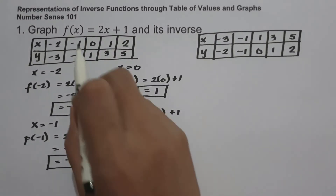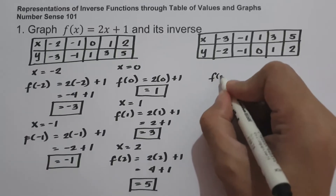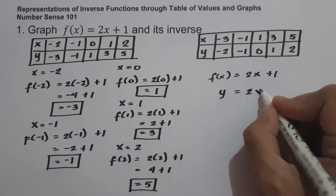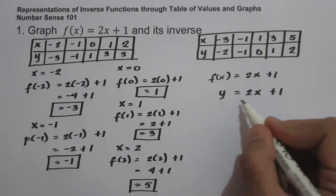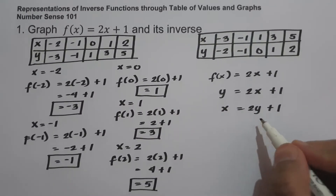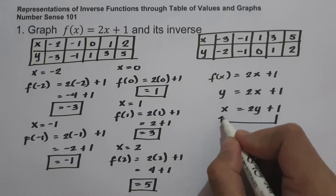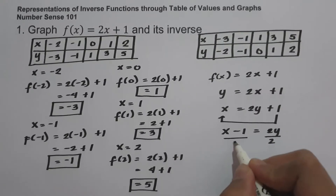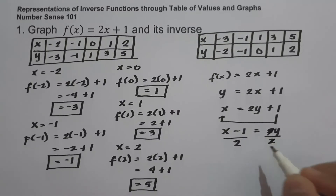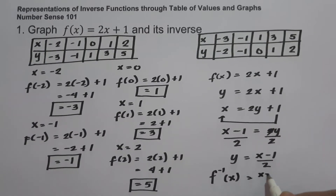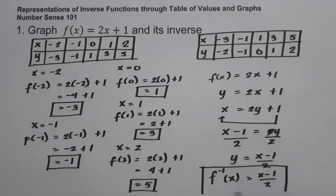To find the inverse algebraically, start with f of x equals 2x plus 1, rewrite as y equals 2x plus 1, then interchange x and y to get x equals 2y plus 1. Solving for y: move 1 to the side of x to get x minus 1 equals 2y, then divide both sides by 2. So y equals x minus 1 all over 2. The inverse of f of x equals 2x plus 1 is f inverse of x equals x minus 1 all over 2.